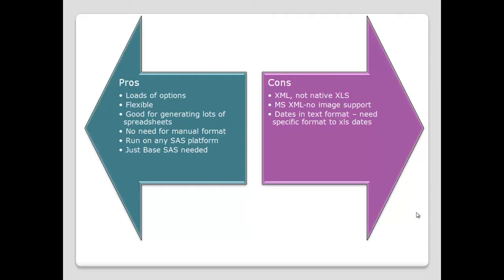What's the downside to this technique? XML is being created, so it's not native XLS, and that limits some things you can do. Because it's Microsoft XML, Excel does read and decode it quite happily, but it doesn't support images — that's one advantage of the MS Office 2K tag set that this Excel XP tag set does not have. Something you've got to watch is dates coming through in text format, meaning dates are not handled properly. The best way to deal with that is to refer to reference papers available on the Nowhere website — there's a whole paper that talks about different formats and how to handle them coming through to Excel.